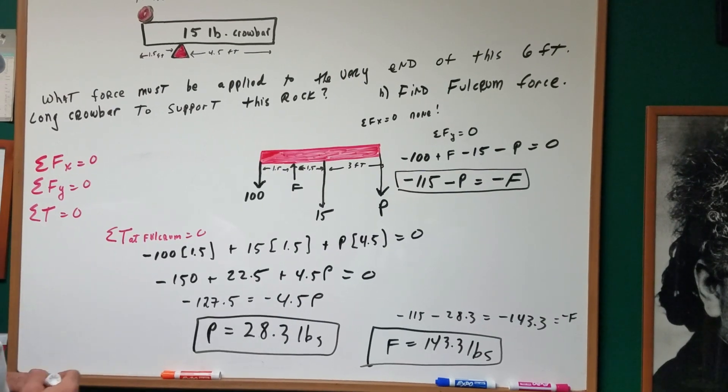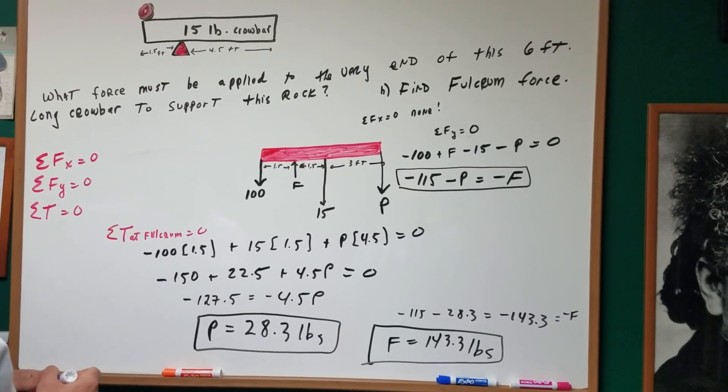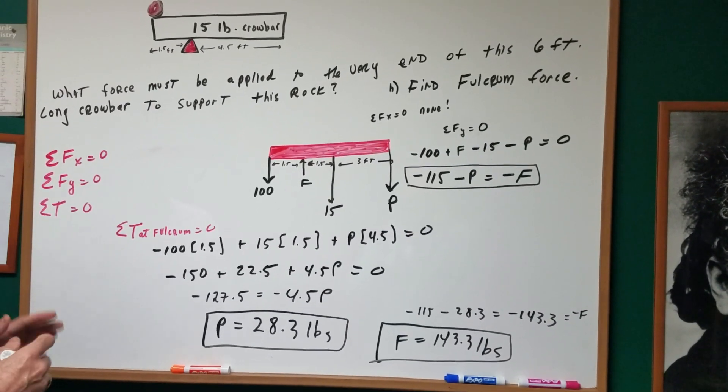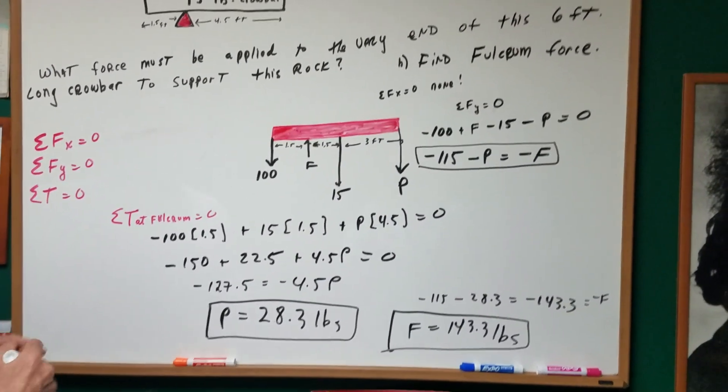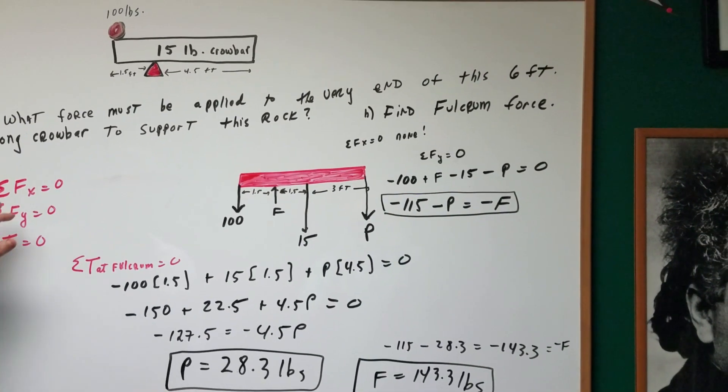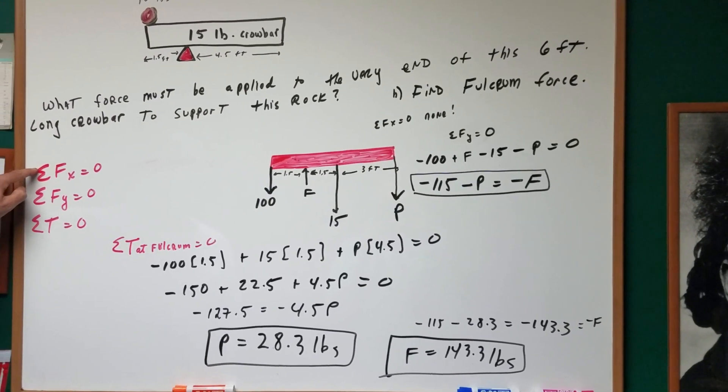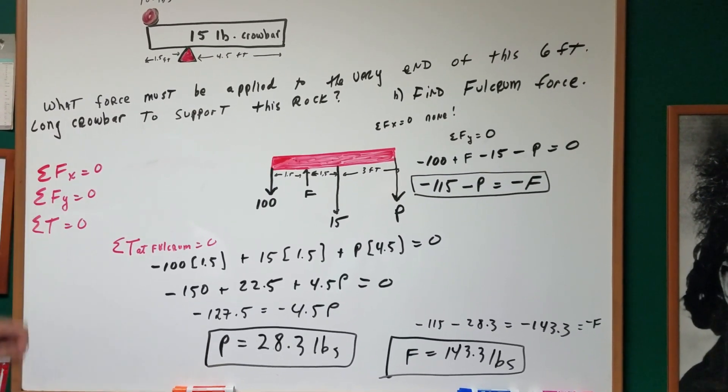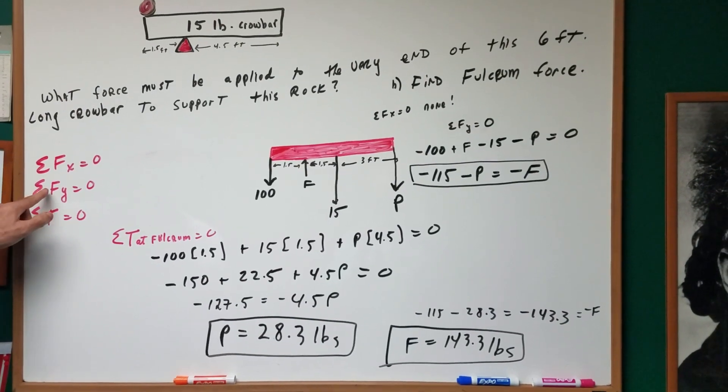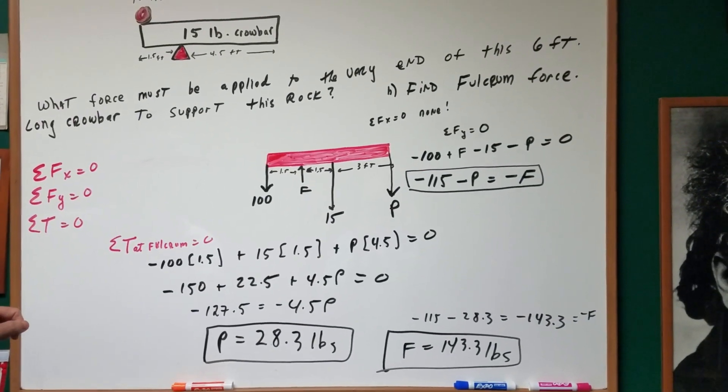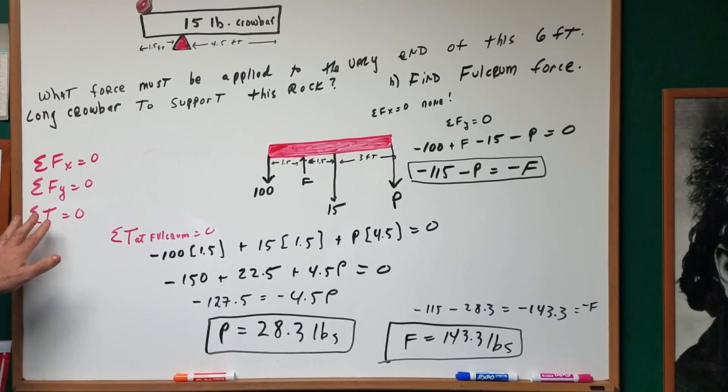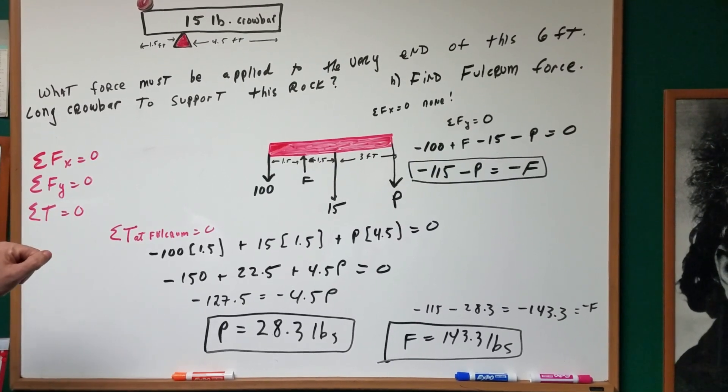this rock. So it sort of gives you the idea like a seesaw type of thing. Now, in order to do problems on equilibrium, there's three conditions that must be met. Let's review them. The sum of the forces in the x direction must equal zero. The sum of the forces in the y direction is zero. And the sum of the torques equals zero.